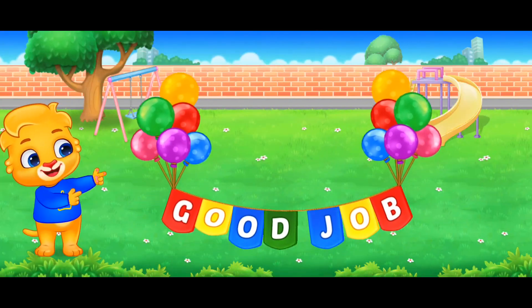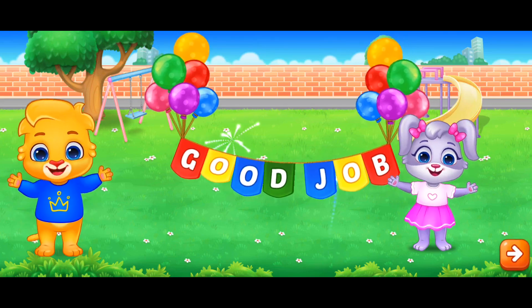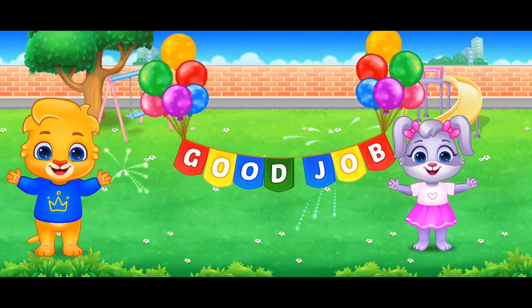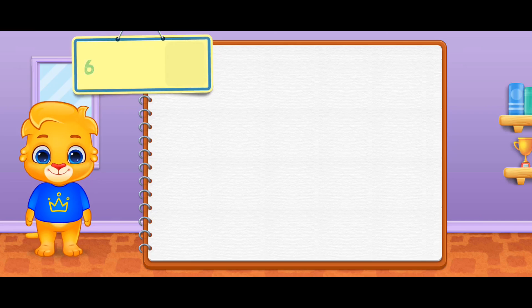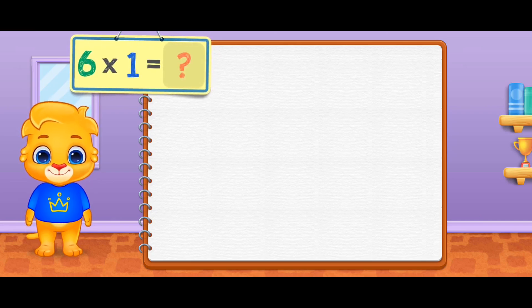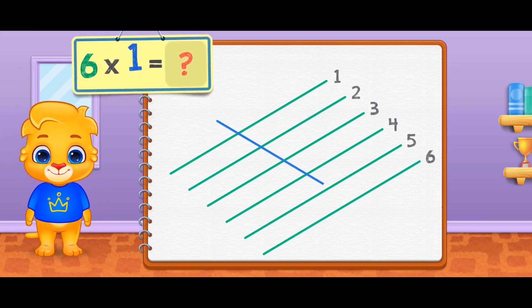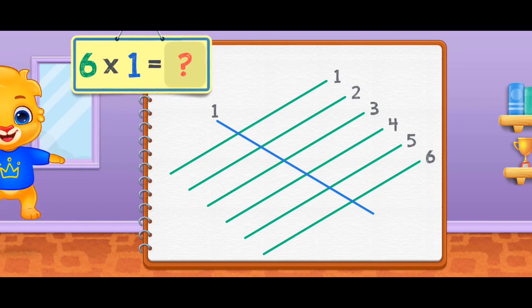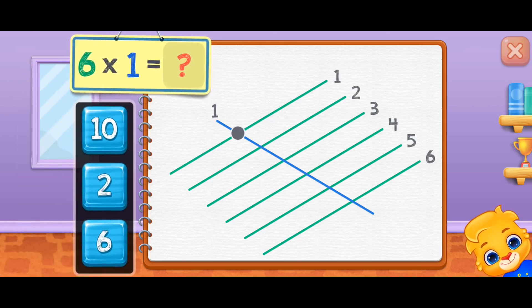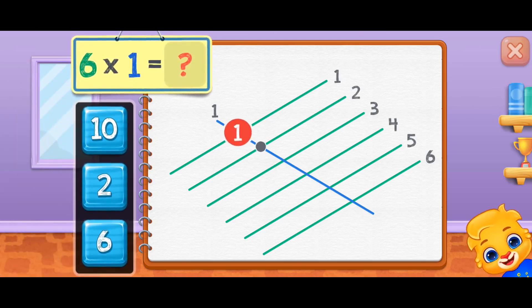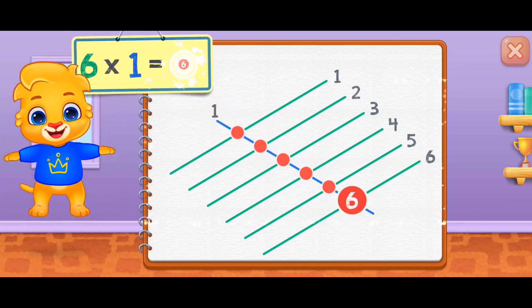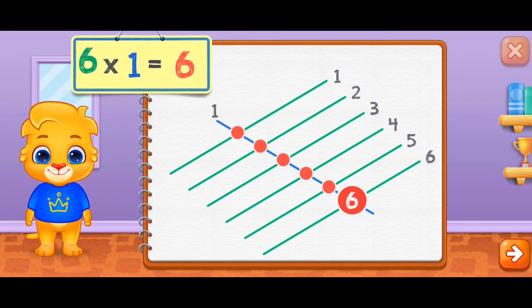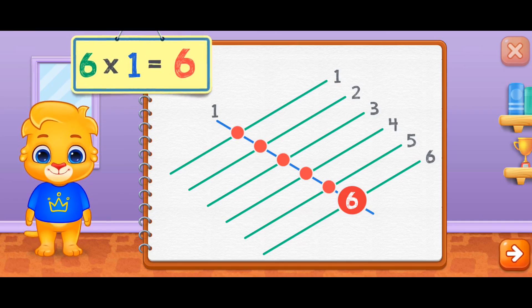Good job! Six times one equals — one, two, three, four, five, six. Six times one equals six.